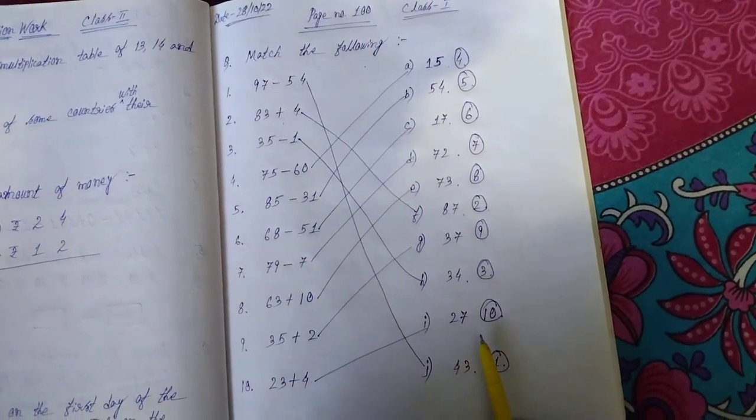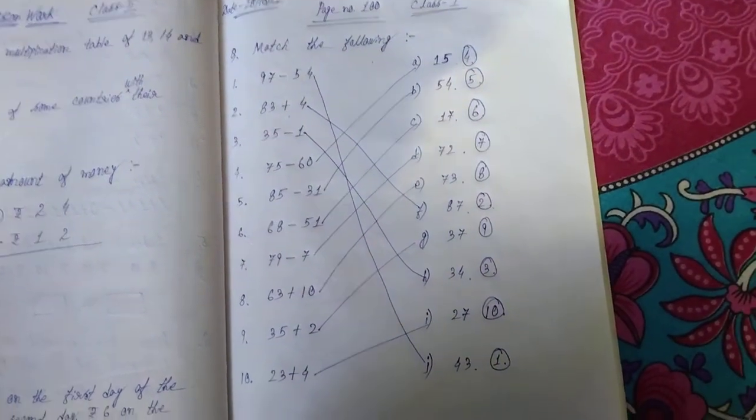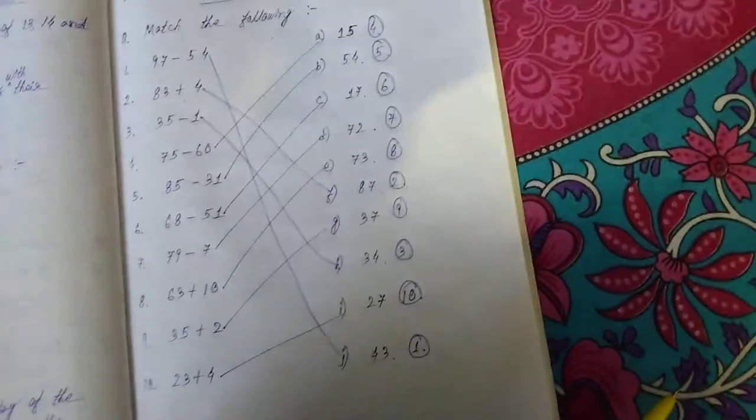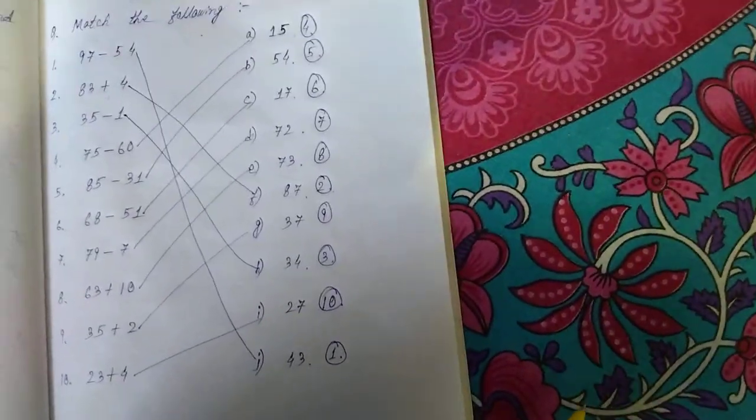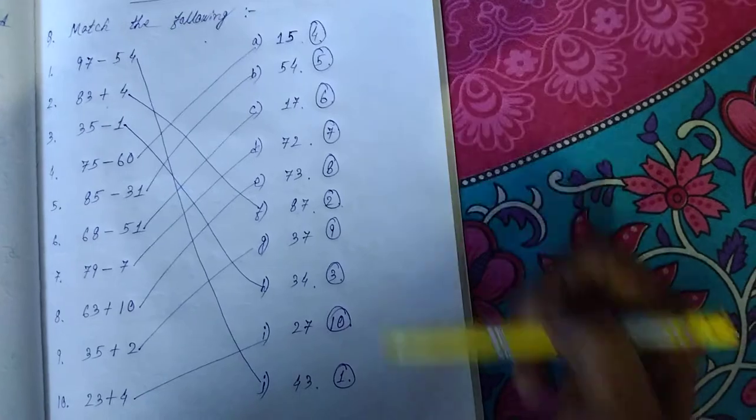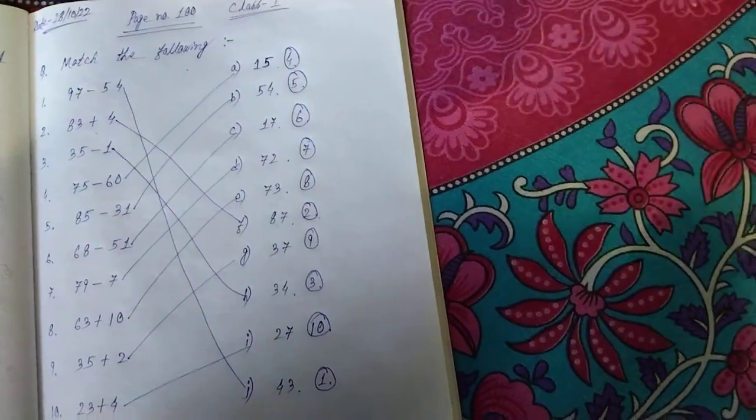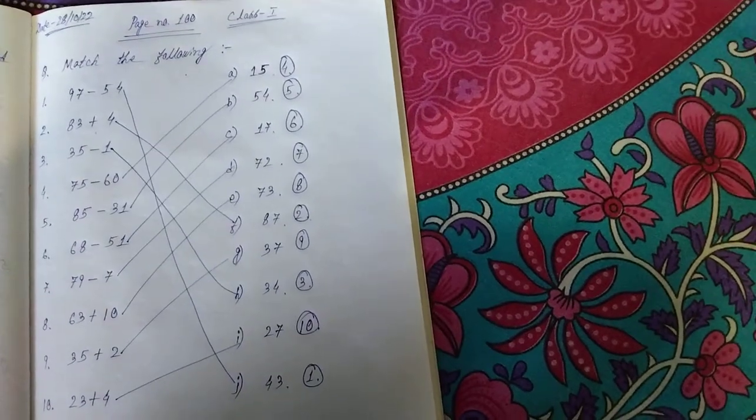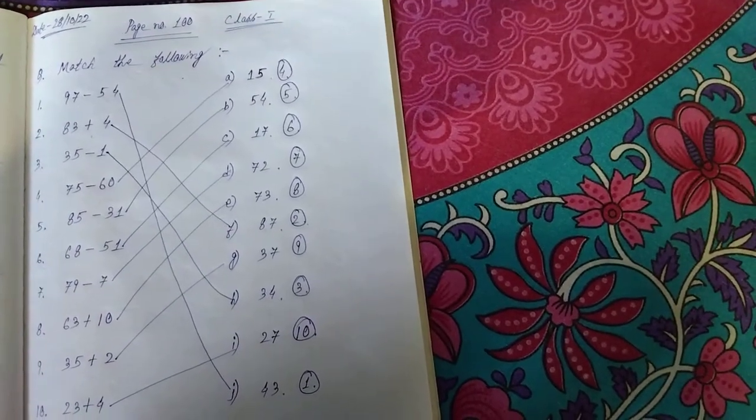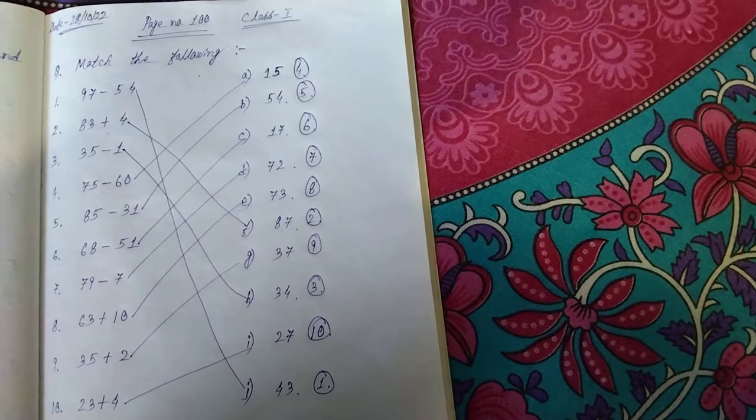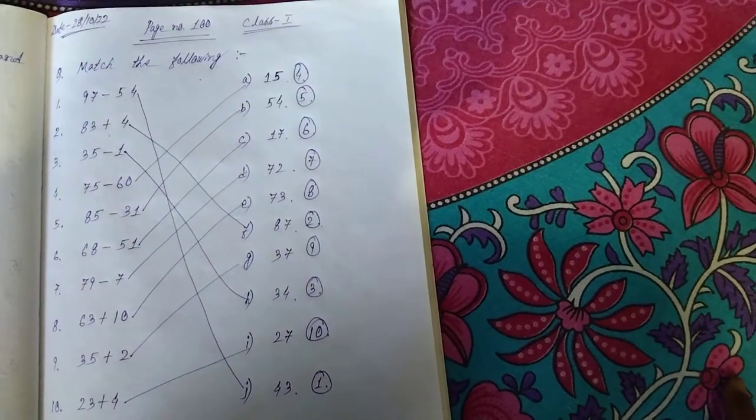So I have done in both ways, which I will tell you: if you do by giving the numbers, it looks nice. But drawing lines, it creates a problem while checking also. See which way you like to do. I have done in both ways, by drawing lines also and by writing the numbers also.